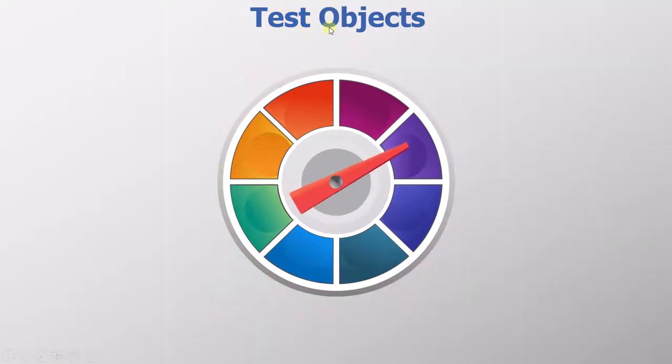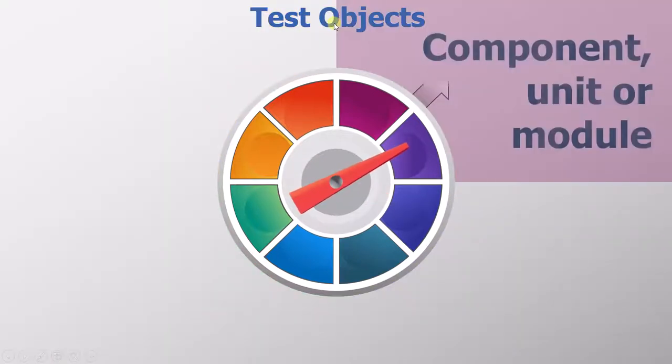Now, let's move on to test objects. What are the objects involved in component testing? The first object is the component, unit or module. So, if there is a larger software, then we need its smallest unit or module to perform the tests on.